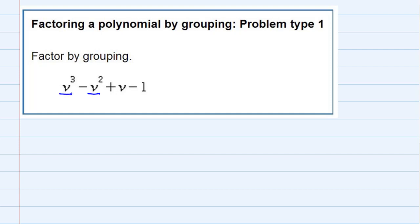We're going to group the first two terms together and then group the last two terms together and see what can be factored out of each one. In the first two, it looks as though they both share a v squared—that's the greatest common factor of those first two terms.